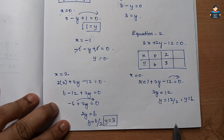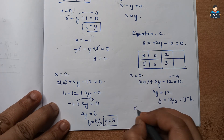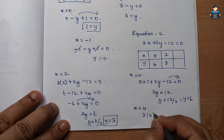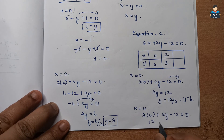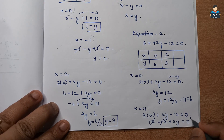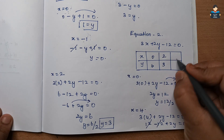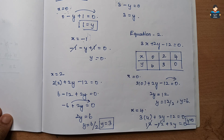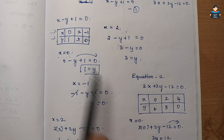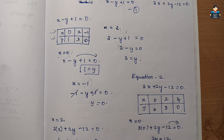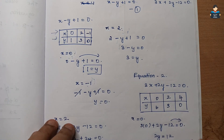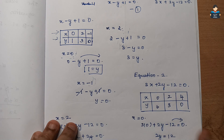Next, x value 4: 3 into 4 plus 2y minus 12 equal to 0, so 12 minus 12 plus 2y equal to 0 — the 12s cancel — so y value equal to 0. So x equal to 4, y equal to 0. Now we have both equations' tables complete. We will plot these on a graph sheet with x-axis and y-axis.